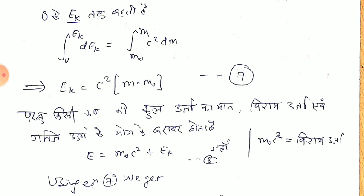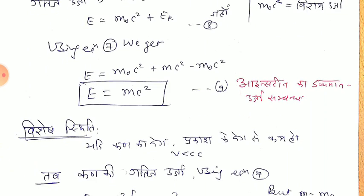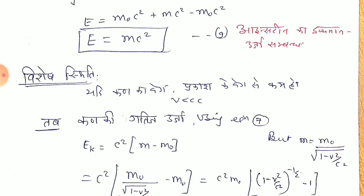The total energy of a particle equals its rest energy plus kinetic energy. So E can be written as m₀c squared plus E_k. Substituting the kinetic energy, we get m₀c squared minus mc squared plus mc squared, and thus Einstein's relation is obtained: E equal to mc squared. This is a very important concept in physics — mass and energy are related.